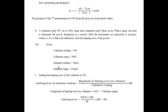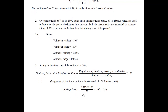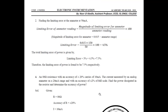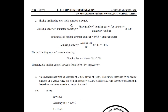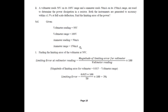The given data is: voltmeter reading, voltmeter range, ammeter reading, ammeter range. We need to find the limiting error. The magnitude of limiting error for the voltmeter is: 0.015 multiplied by the voltmeter range (100), divided by the voltmeter reading (50), into 100. So the limiting error for the voltmeter is 3 percent.